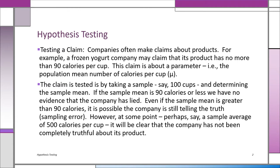They're not talking about one particular cup of yogurt. They're talking about a parameter — the mu, the population mean. When it comes to calories per cup, that mu is less than or equal to 90. We're going to do a hypothesis test using the same kind of sample evidence we saw in estimation. The sample evidence is n, x-bar, and s.